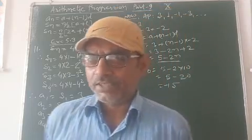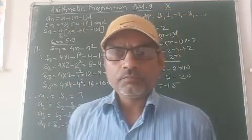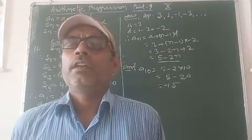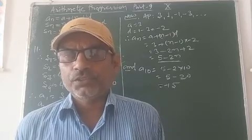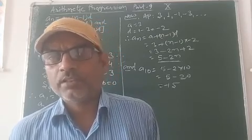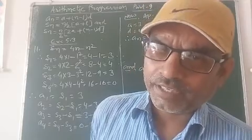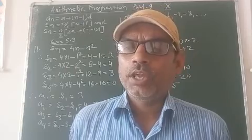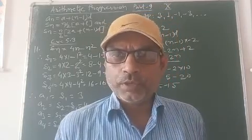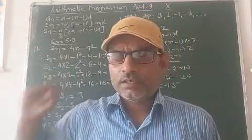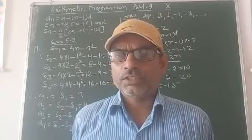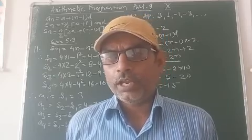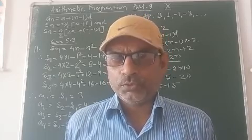Before we start the exercise, let's recall the formulas which we learned in the previous class. An, the last term, equals a plus n minus 1 into d. Sn, the sum of first n terms of an AP, equals n by 2 into a plus l. And also sum of first n terms equals n by 2 into 2a plus n minus 1 into d.